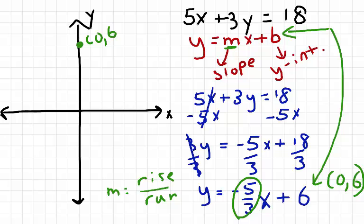I'll start at my y-intercept: down 1, 2, 3, 4, 5, and right 3: 1, 2, 3. That will give me a coordinate pair where x equals 3 and y equals 1.